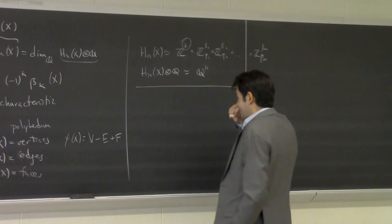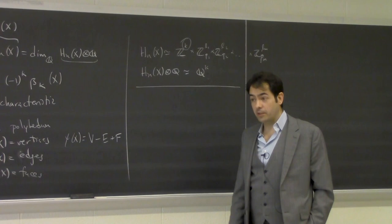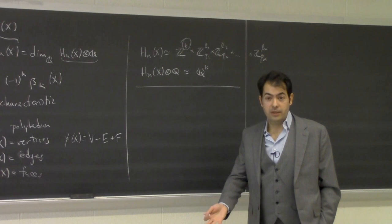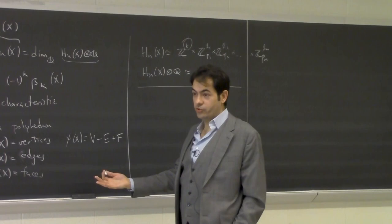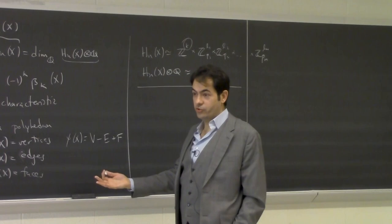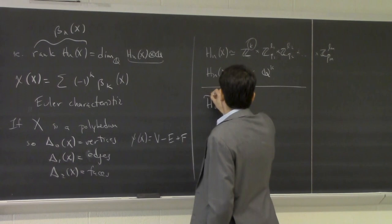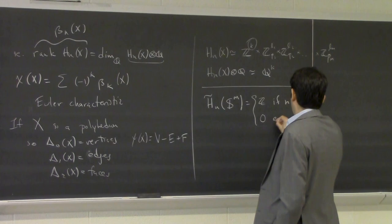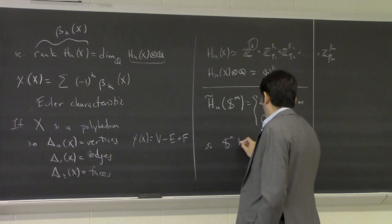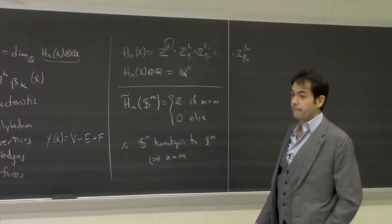One of our applications with the fundamental group was to show that the circle is different from spheres of arbitrary dimension. Now that we have homology we can do this more generally. We know that H̃_n(S^m) = Z if n = m, and 0 otherwise. So S^n is homotopy equivalent to S^m if and only if n = m.